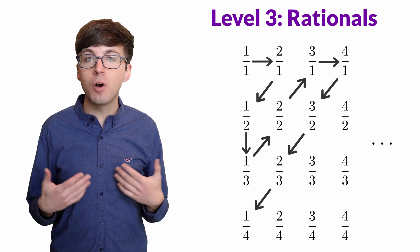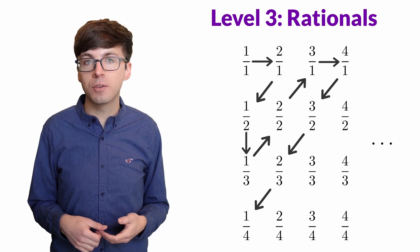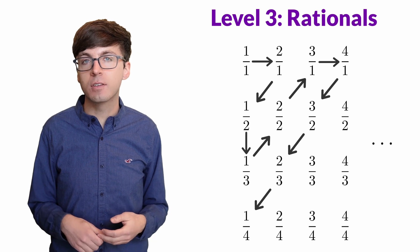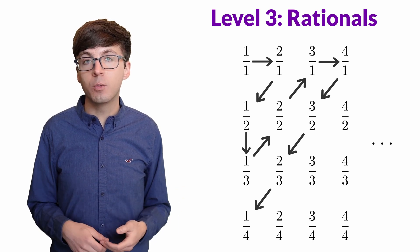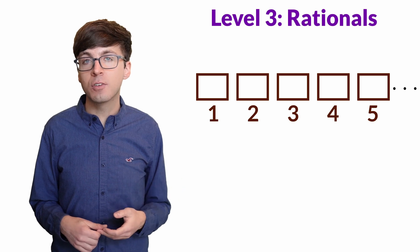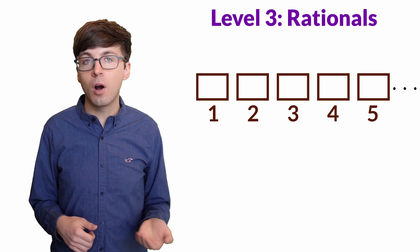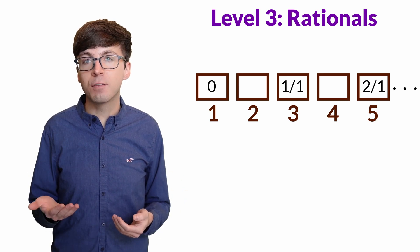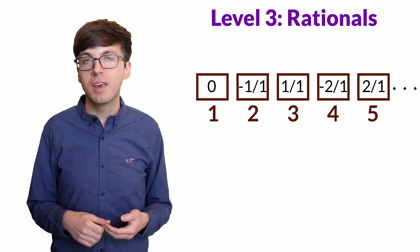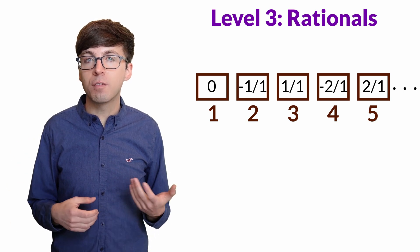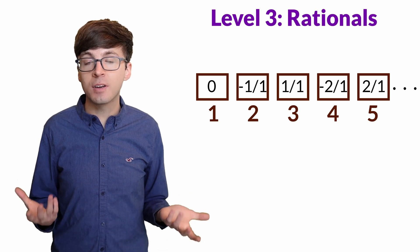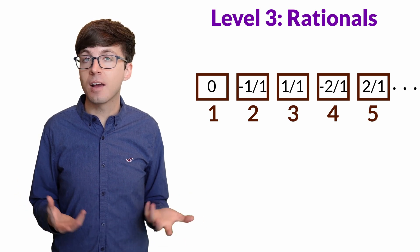Now what happens if we want to include all the rationals, including zero and the negative fractions? We can do exactly what we did before: have the non-negative fractions stay in the odd-numbered rooms, and the negative fractions in the even-numbered rooms. Again, we're able to show that the fractions are countable and have the same cardinality as the integers.